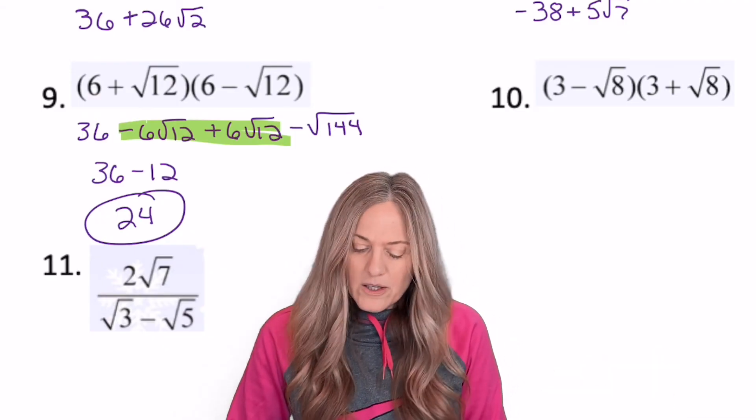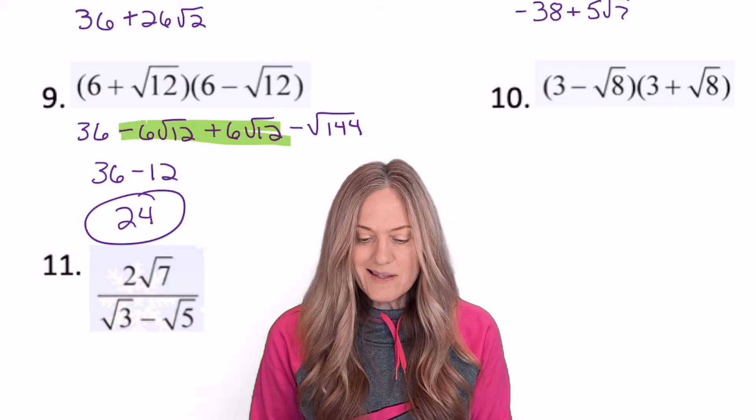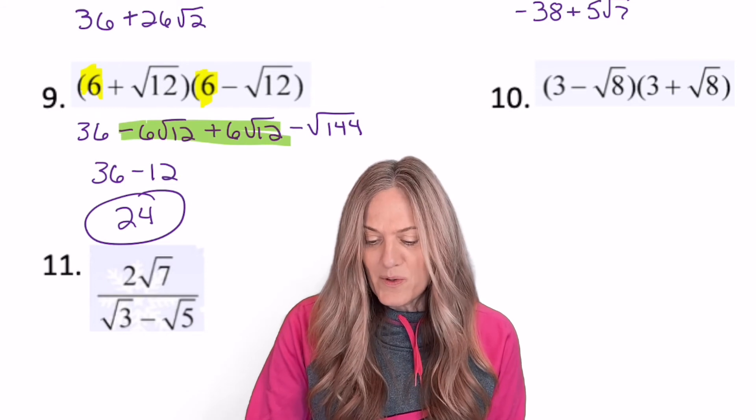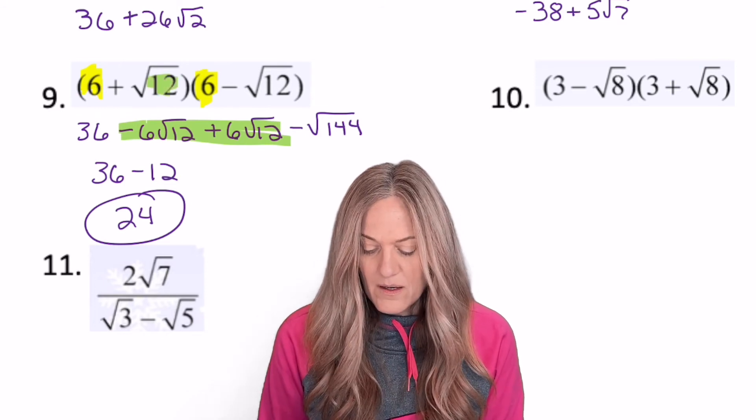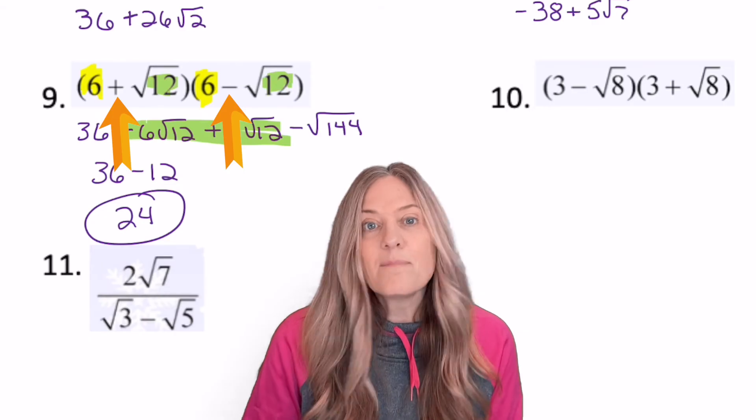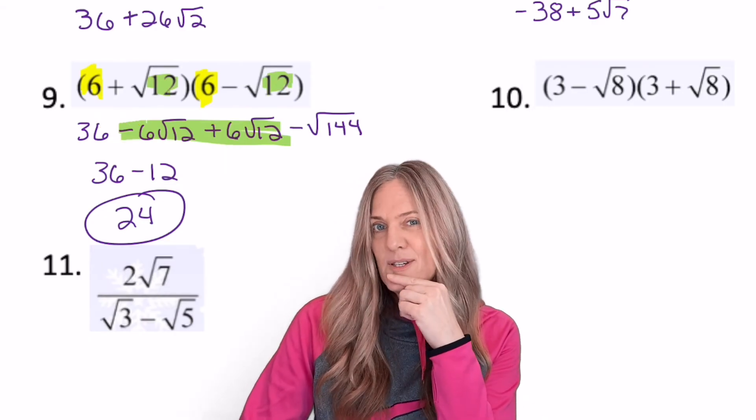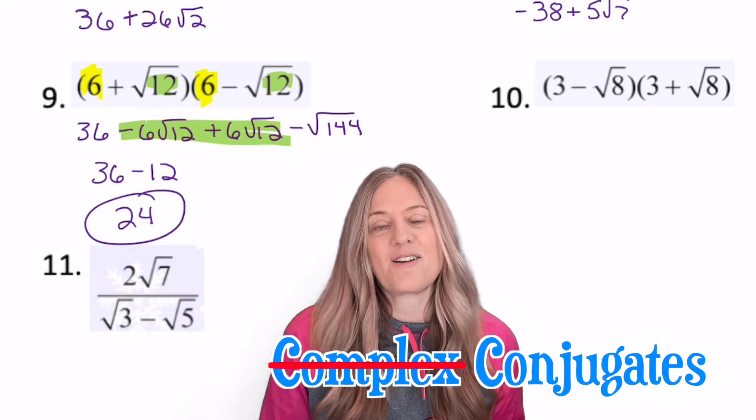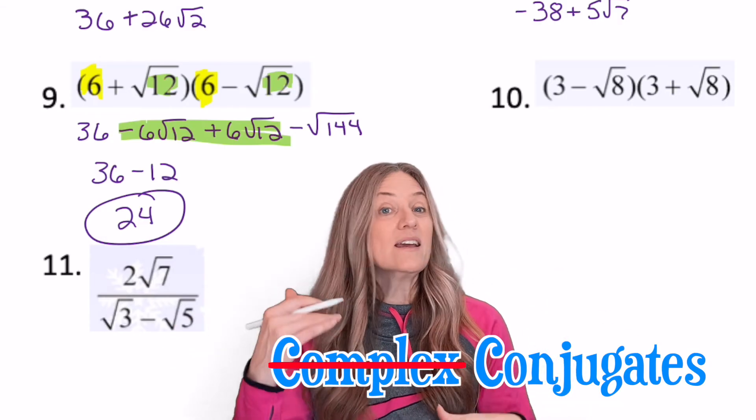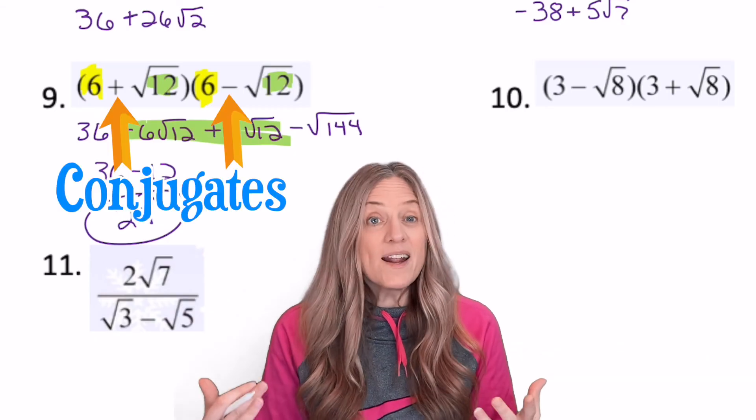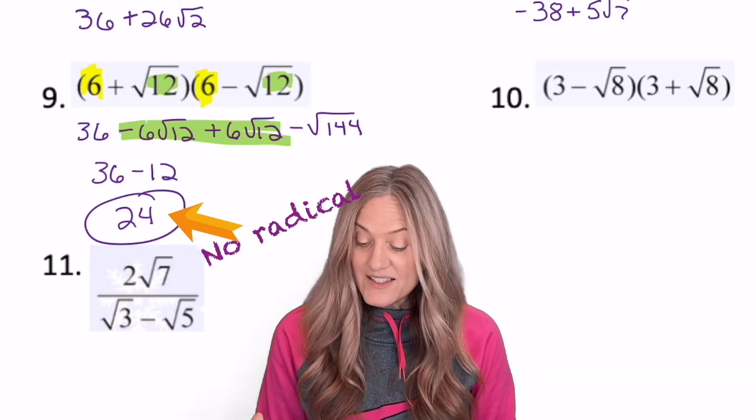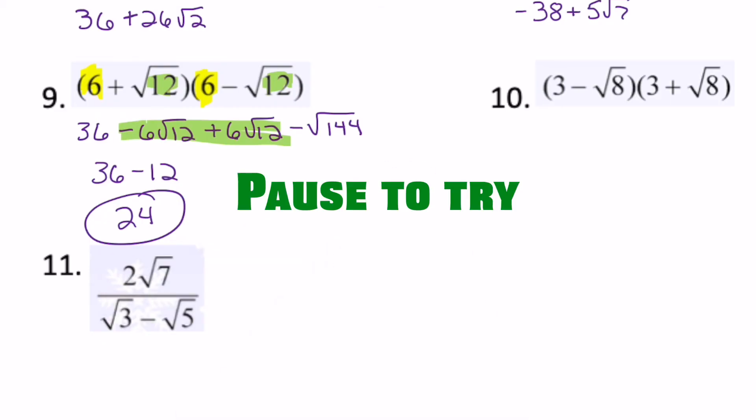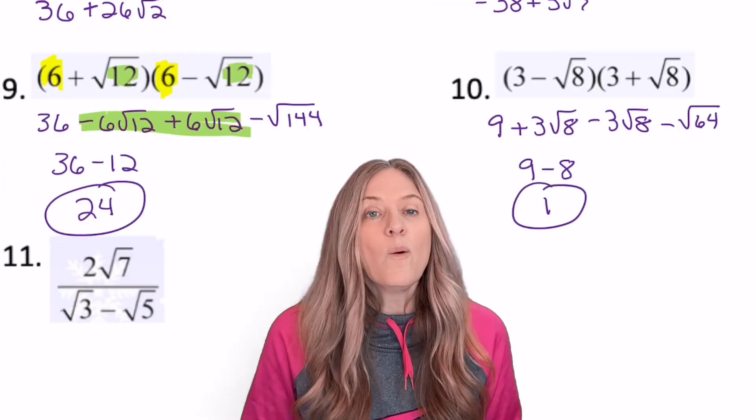Look back at this problem. What did you notice? The 6 and the 6 are the same. The square root 12 and the square root 12 are the same. So then what was different? The middle sign. Do you remember when we did complex numbers, we had complex conjugates? Well, these aren't complex conjugates, but they are conjugates, where all we do is we change that middle sign. And what ends up happening? We get rid of the radical. Let's take a look at number 10. What do you get? 1.